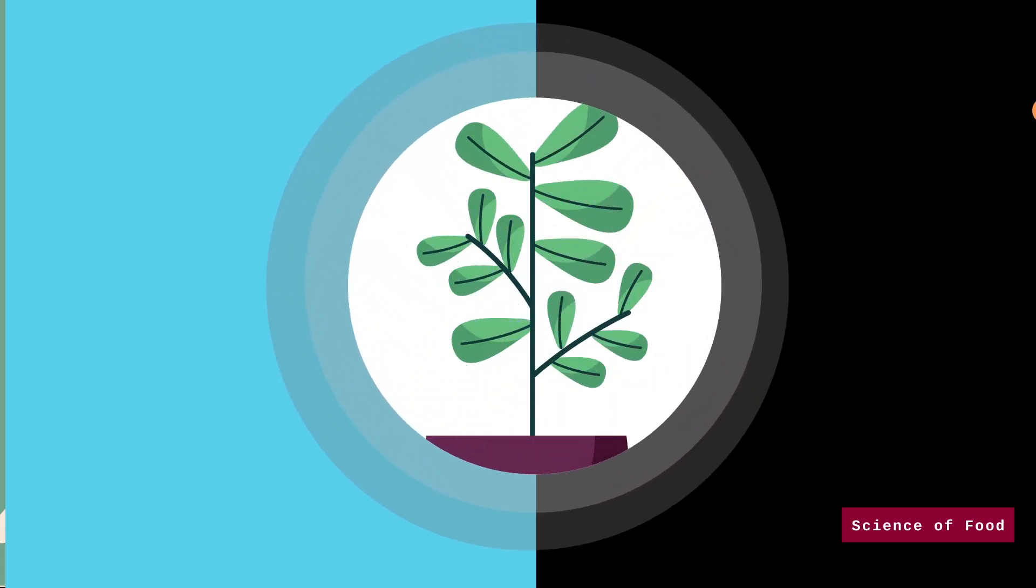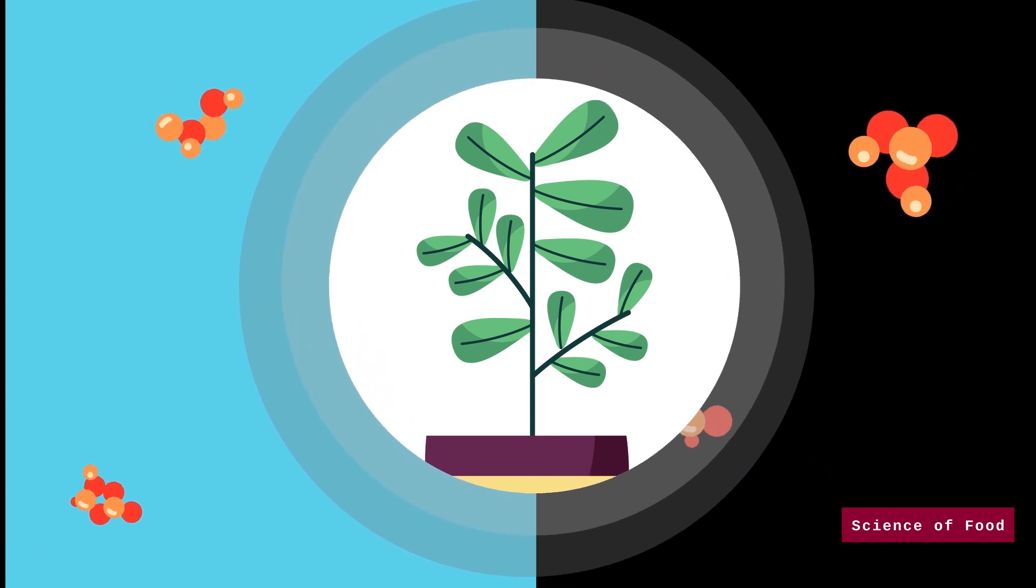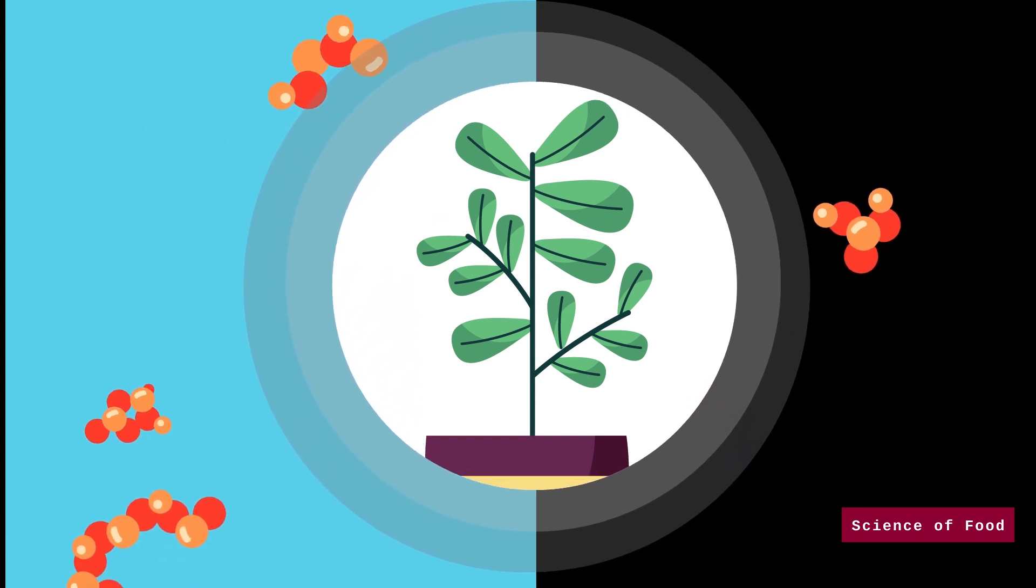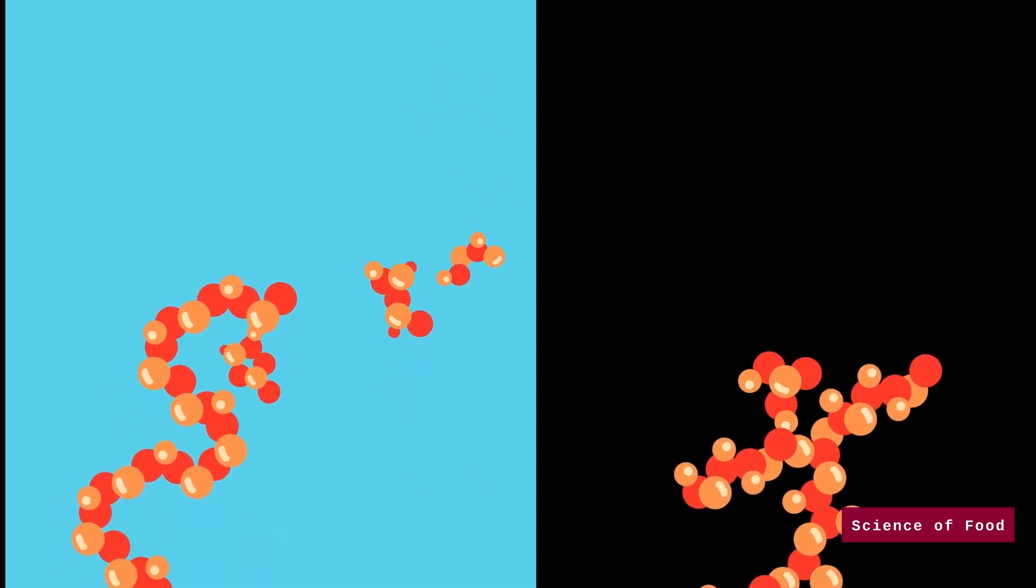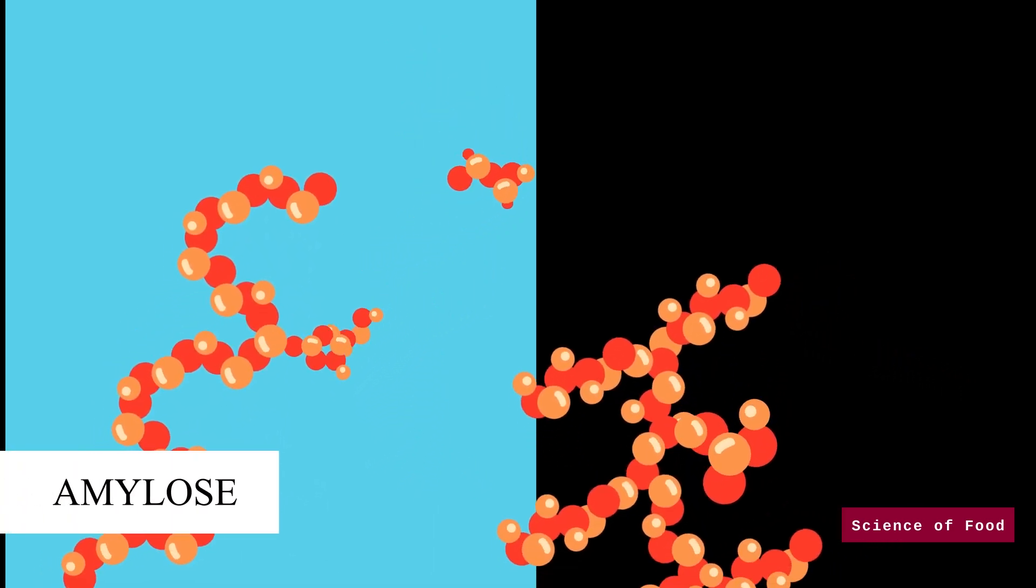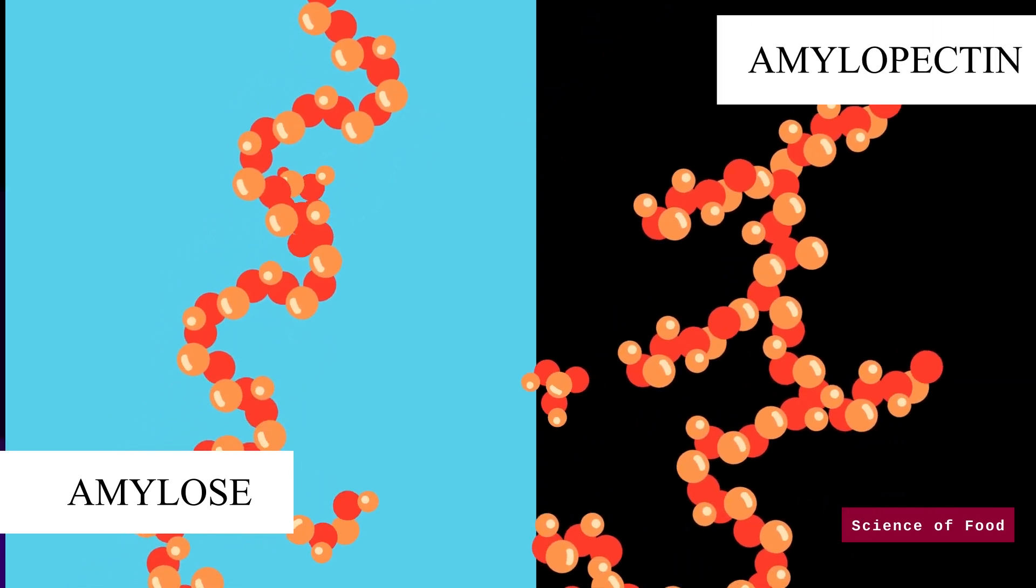Starches are naturally occurring carbohydrates that are produced by plants. It is a chain of glucose polymers and can be in the linear form or the branch form. A glucose chain that has a linear form is called amylose, while a branched glucose chain is referred to as amylopectin.